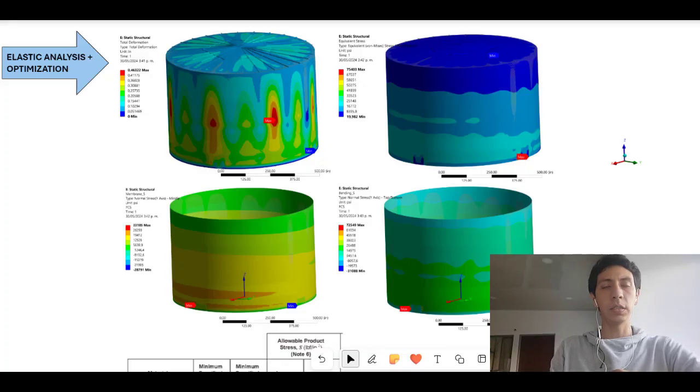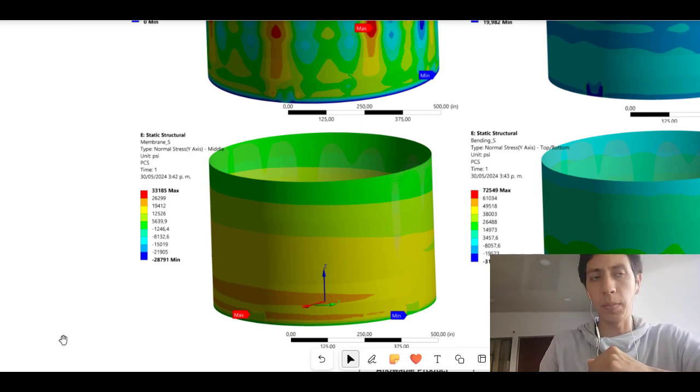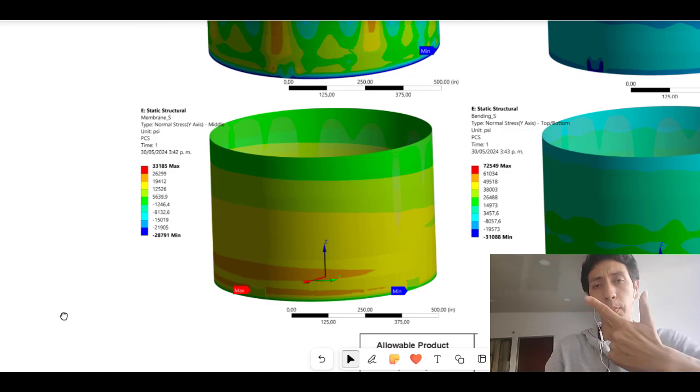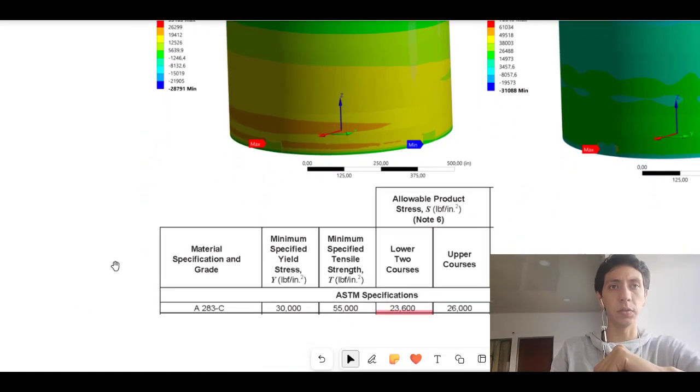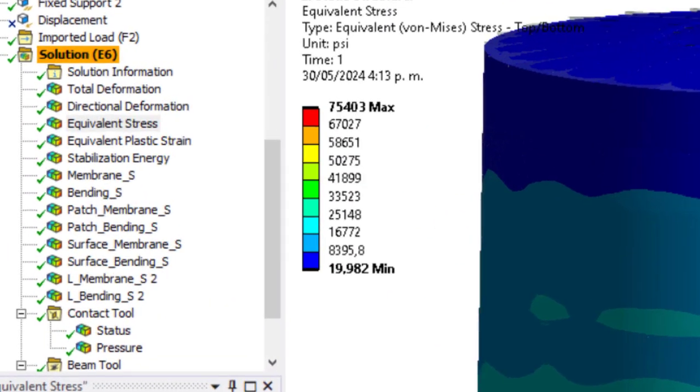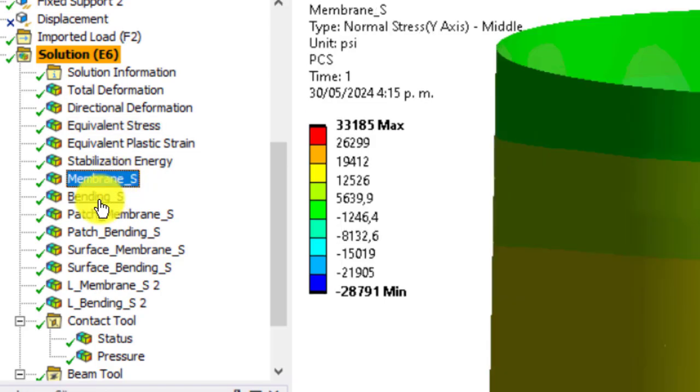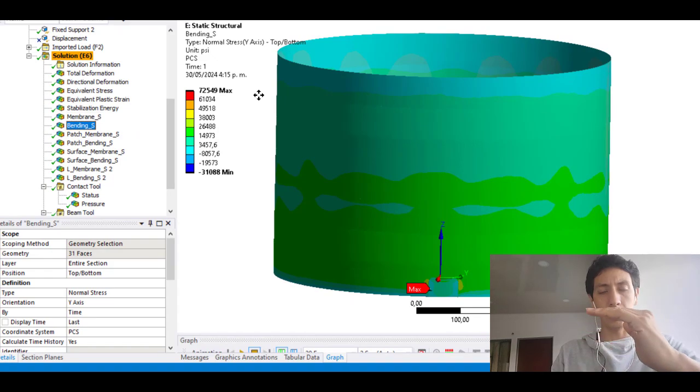The elastic analysis does not use penalty factors. In other words, it does not produce yielding nor plastic strain. This assessment methodology uses allowable values instead for membrane and bending stresses. It will depend on the classification you do in your equipment and the load that it is subject to. For this specific case, the allowable value is around 23,000 psi. If we look at the simulation where we had dead weight, seismic load and hydrostatic load, the equivalent stress, membrane stress and bending stress are above that criteria. So, how do we solve this problem?